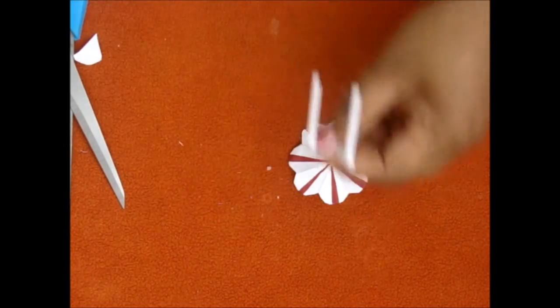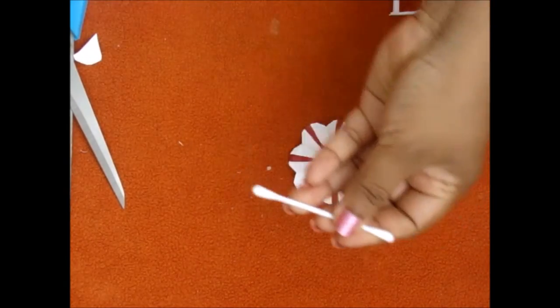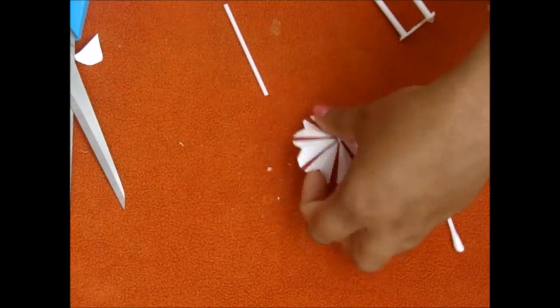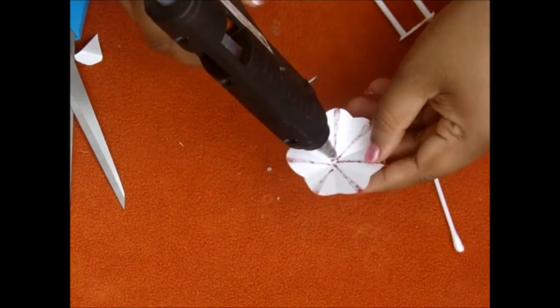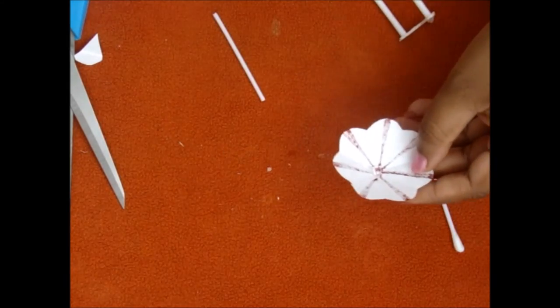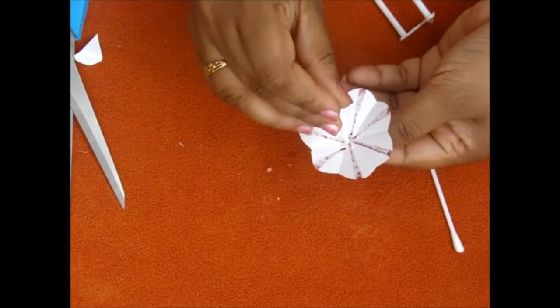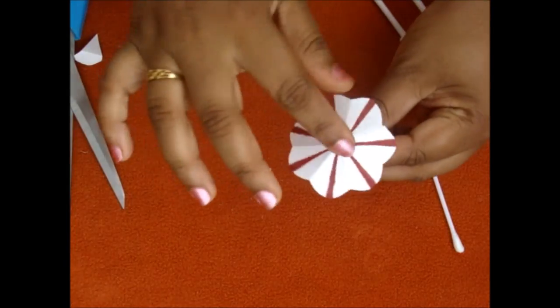You can use a pizza stick or a Q-tip. Turn it in half. And add a drop of glue. And attach the Q-tip. Your umbrella is almost ready.